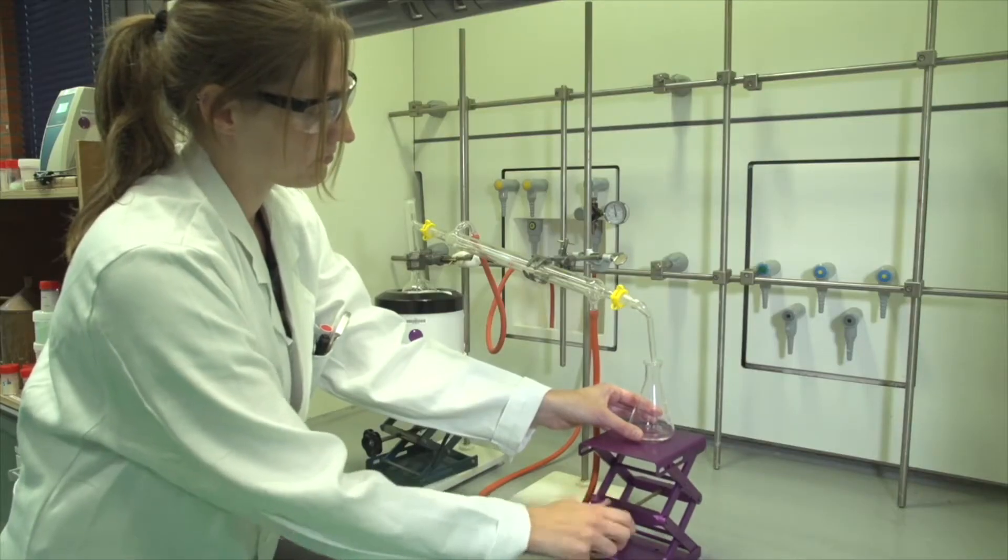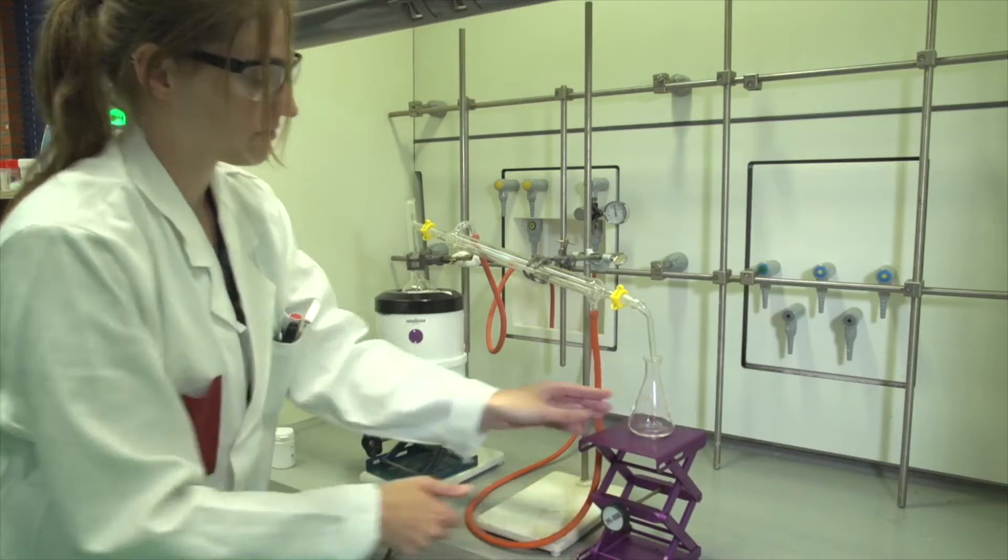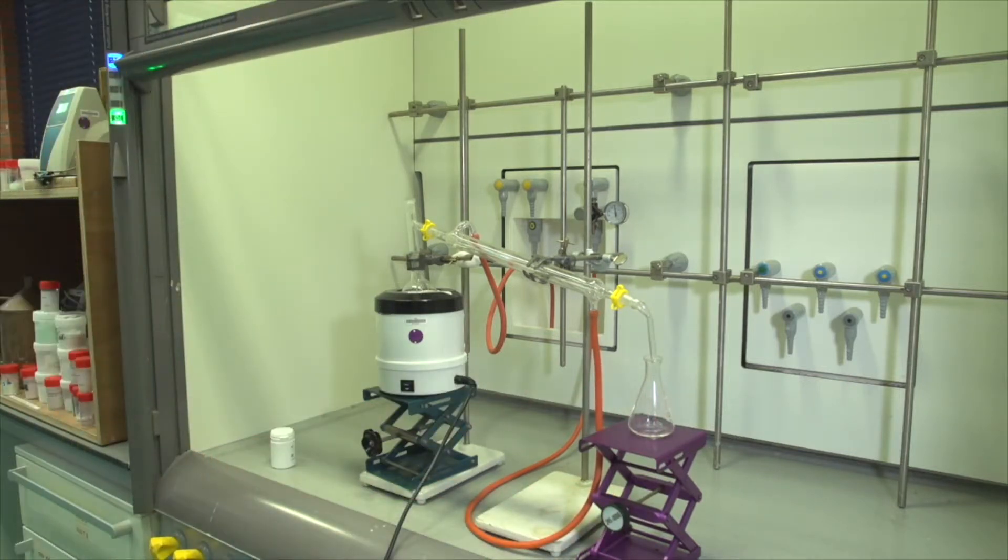To collect the distillate, an Erlenmeyer is placed under the bent adapter. If needed, use an extra lab jack if the Erlenmeyer isn't high enough. If your compound is volatile, you can place the Erlenmeyer in an ice bath to prevent evaporation.